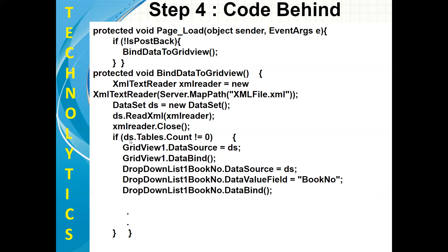On the next line, if ds.Tables.Count is not equal to zero — sometimes if there are no records, we check for that as well. So if no table or no single record is there, then nothing will happen. But if some records and tables are there on my DataSet, then we try to bind the data — that is the XML database — with our respective controls.